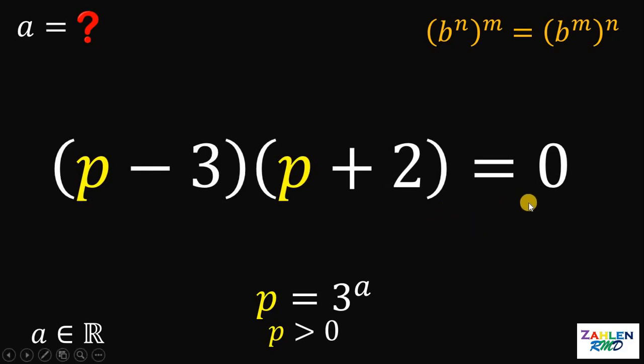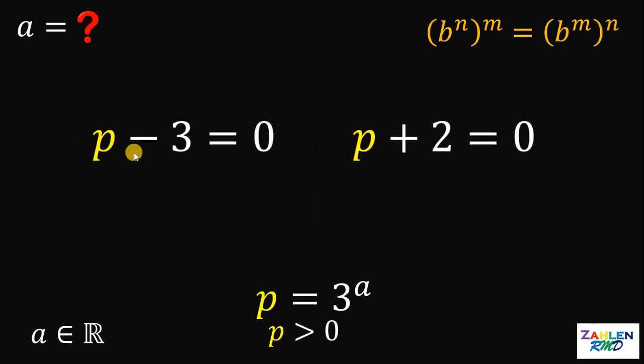Let's go back to the factored form. Since it is equal to 0, it follows that at least one of them must be equal to 0. So, we have p minus 3 equal to 0 or p plus 2 equals to 0. On the first equation, we can solve for the value of p. Let's add 3 on both sides. This will give us the value of p as 3.